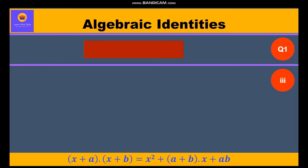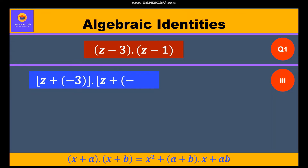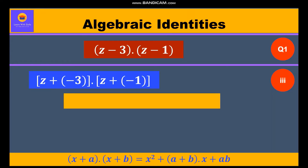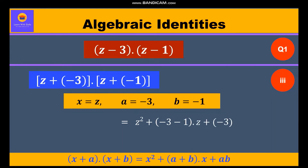Now let's take the third part: (z - 3) into (z - 1). Again, we take the minus sign inside the bracket to get z + (-3) into z + (-1). Here x is equal to z, a is equal to -3, and b is equal to -1. Substituting into Identity 5: z² + (-3 + (-1))z + (-3 × -1), which equals z² - 4z + 3.